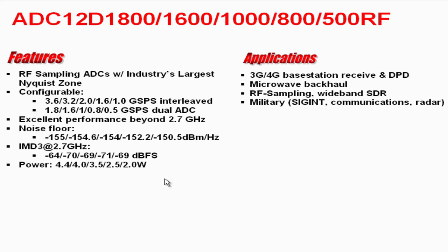This data converter is part of the ADC12D1800, 1600, 1800, and 500 RF family. A few key features which make it an ideal data converter for a communications application are, first of all, its extremely high sampling rate. This provides for a very large Nyquist bandwidth in which many communications channels can be stacked.